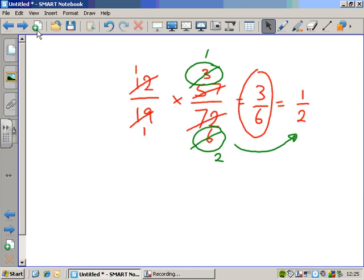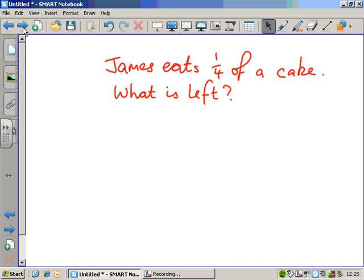Okay, so how might multiplying fractions come into play in a word problem? Well, let's look at a question. James eats one quarter of a cake. What is left? This is part A, by the way. It's not the whole thing.